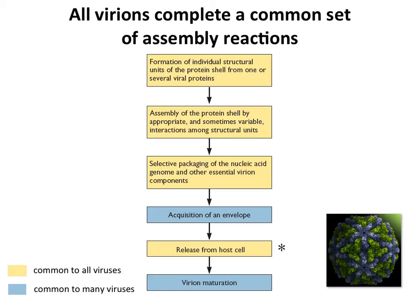Many of those reactions are in common to all viruses — the yellow ones on this slide. For example, you have to make all the individual structural units from viral proteins. Those viral proteins assemble into structural units, you make a shell in some cases, and you have to get nucleic acids into the particle. In some cases the virus particles get an envelope — shown in blue — because not all viruses are enveloped. Then you have to be released from the host cell.